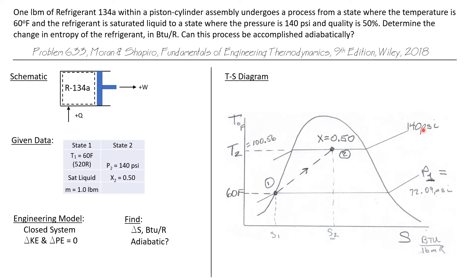Now if I look in the saturation table at 140 psi, I see the saturation temperature which would be T₂ is 100.56°F. And again in the saturation table at 60°F, I see that the saturation pressure is 72.09 psi, that would be our P₁, and we can see that P₂ is plotted here at a higher pressure than P₁.